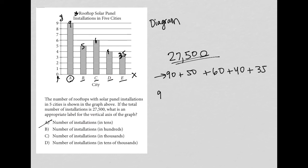Now, what if we follow choice B, and instead these values on the x-axis were in hundreds? So we have 900, 500, 600, 400, and 350.